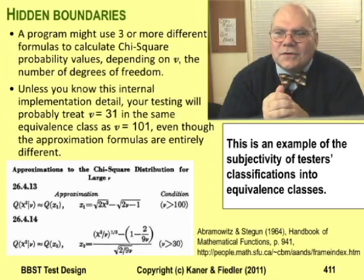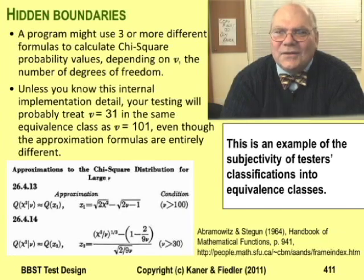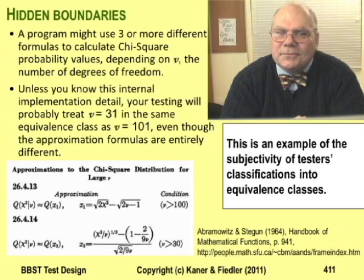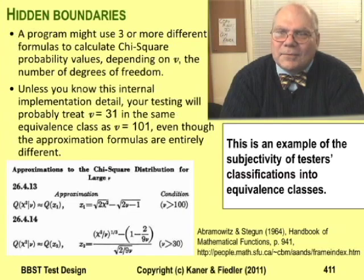If the implementation of that middle range function was broken, you'd never see it. And there are plenty of special cases in code. As with chi-square, they get put in to optimize the program's speed, and they're invisible to the external user and the black box tester. If you believe there might be hidden boundaries in the program you're testing, check with your programmers.